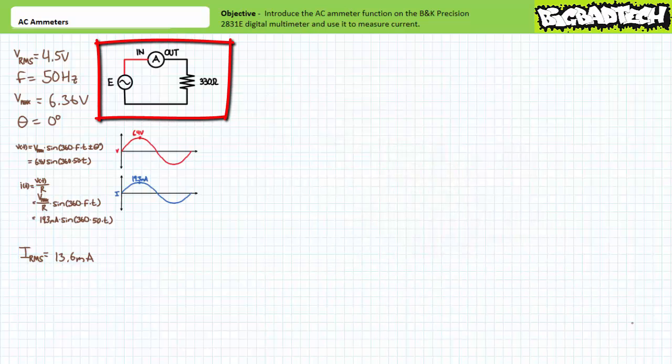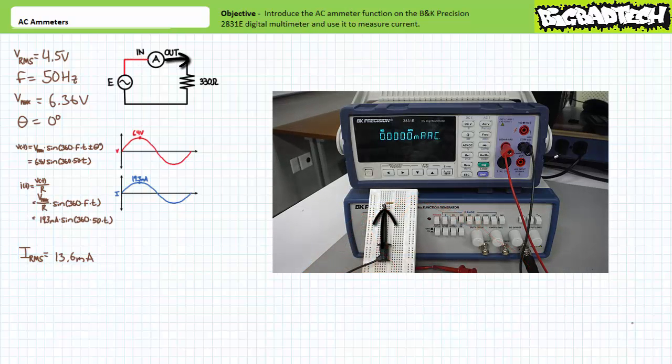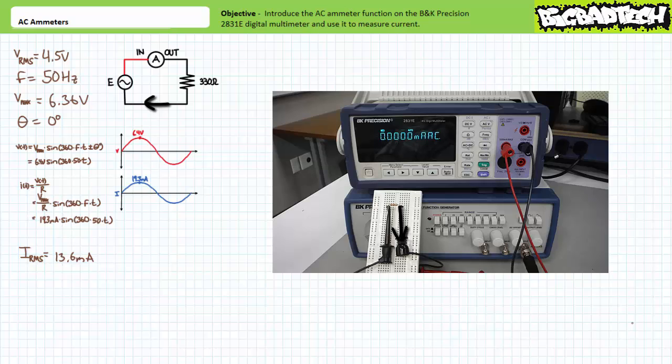Recall that ammeters must be placed in line or in series with our load as illustrated in this diagram. Power off the function generator and insert the ammeter in the circuit as follows. Come out of the function generator red lead and go into the ammeter and the ammeter only using a red lead inserted to the red input port on the left. Come out of the ammeter black common output port on the right and go into the 330 ohm resistor and only the 330 ohm resistor using a black lead. Now we just need to complete the circuit. Come out of the 330 ohm resistor and go into the black terminal of the function generator.